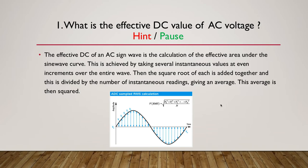So here's the hint slide. I'll just turn my pen on. And the hint is the effective DC of an AC signal wave is the calculation of the effective area under the curve of the sine wave. So we're kind of interested in this area here, how much of that area represents a DC value.